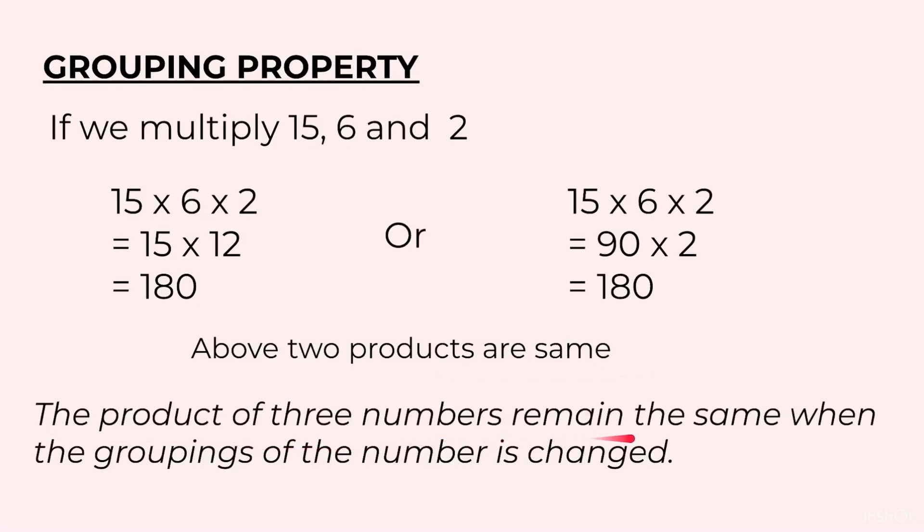The product of three numbers remain the same when the groupings of the number is changed. No matter how we group the numbers in multiplication, the final answer is going to be the same.